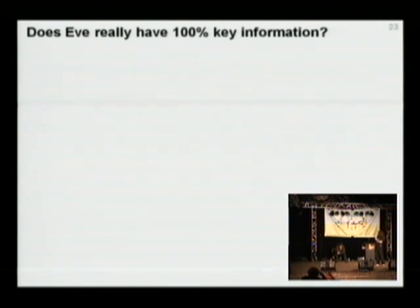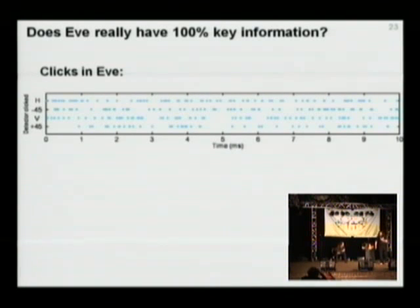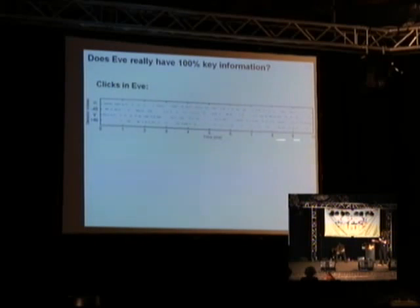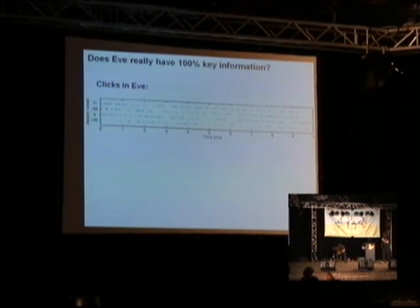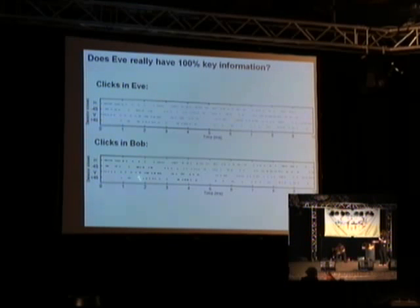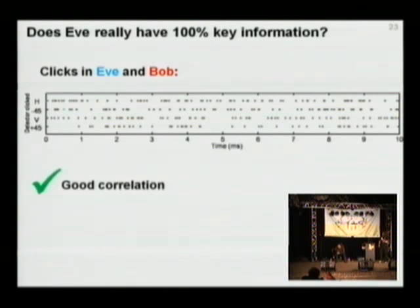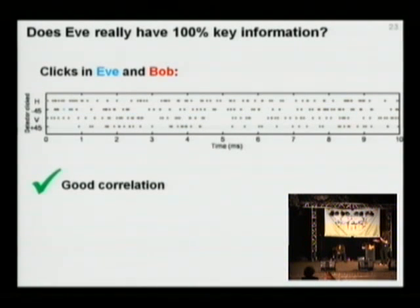To do a final check that we have succeeded in this experiment, we look at a small time slice of the time diagram of clicks recorded for Eve's detectors. Looking at 10 milliseconds of this data, you see a sequence of clicks recorded on each detector at different times. Then we look at the data recorded by Bob over the same 10-millisecond period — this looks very similar. I will superimpose them together. There is very good correlation: whenever Eve has a click, Bob also has a click. The blue and red dots superimpose. However, there is a single instance where Eve had a click but Bob did not.